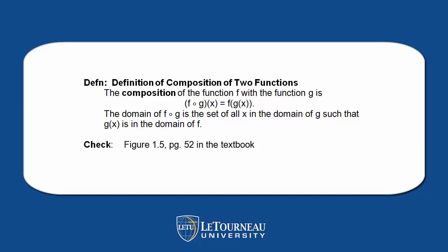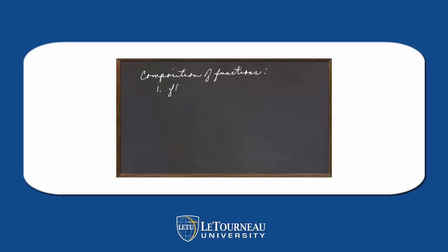The definition of composition of two functions: the composition is f circle g equal to f of g of x. The domain of f circle g is the set of all x in the domain of g such that g of x is in the domain of f. Check figure 1.5 on page 52 in your textbook.